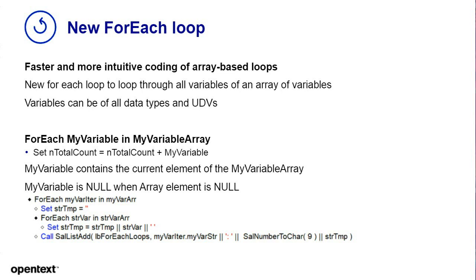Here are the programming enhancements. The first is the new for-each loop. You have faster and more intuitive coding of array-based loops. The loop automatically loops through an array of variables. All data types can be used in Team Developer, including UDBs. All the handling is done automatically for you — the loop iterations and everything. The instance variable basically contains the actual element being processed in the loop. And if that element is null, then the variable is null as well. These new for-each loops make loop programming much easier.